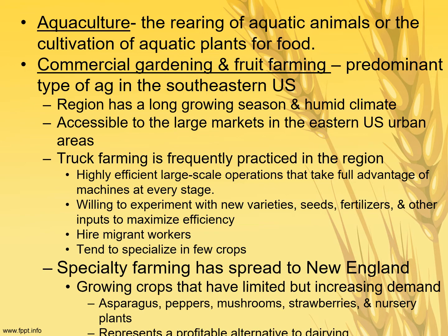Commercial gardening and fruit farming is the most common type of agriculture in the southeast U.S. — that's why Georgia is known as the peach state and Florida for oranges. We grow fruits and vegetables because of the favorable climate and accessibility to large eastern U.S. markets. Farming is highly efficient with large-scale operations taking full advantage of machines at every stage, and farmers are willing to experiment with new seeds, fertilizers, and other inputs to maximize efficiency. Many hired migrant workers pick the fruits and vegetables. Specialty farming has spread to New England as well, growing crops with limited but increasing demand like asparagus, peppers, mushrooms, strawberries, and nursery plants.